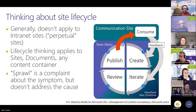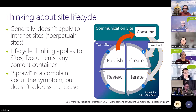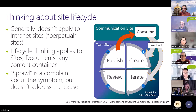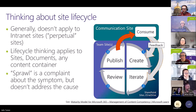Sprawl is a complaint that people have because they don't think about lifecycle. If you see 100 sites, that's not actually a problem unless 95 of those aren't in use anymore. The fact that there's sprawl is considered a problem, but it's not if all those sites are active, providing value, and making people more effective. The picture on this slide is from our management of content competency in the maturity model for Microsoft 365. Within a team site, you create content, iterate, review, publish — that's a lifecycle.